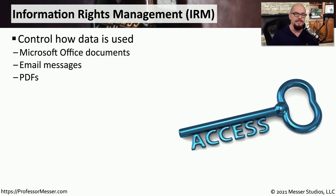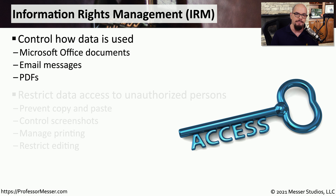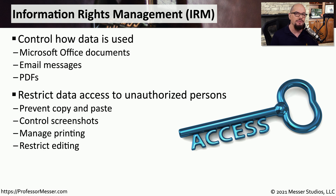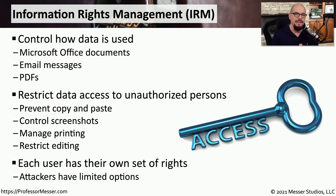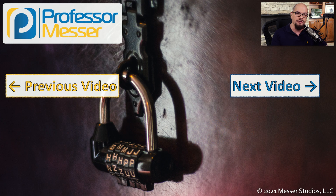If you've ever worked with a Microsoft Office document that didn't allow you to modify parts of the page, or a PDF that wouldn't allow you to copy or paste, then you've seen Information Rights Management, or IRM. IRM is used to prevent certain things from occurring within a document — for example, preventing copying and pasting, controlling screenshots, managing the printing process, or restricting people from making changes to the document itself. The goal with IRM is to limit the scope of what people can do with a document, so if an attacker gains access to someone's workstation, they can only manipulate the document within that user's rights and permissions.